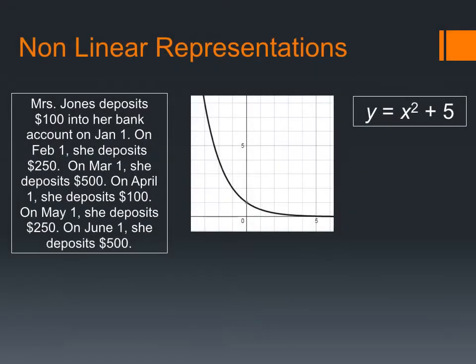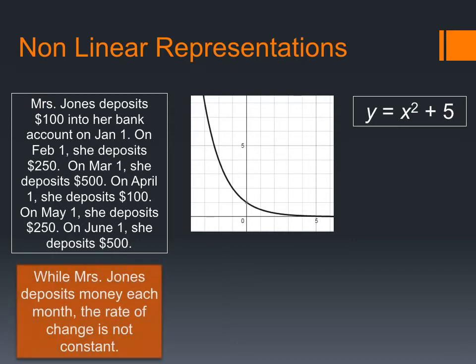Now let's look at these non-linear representations. What do we notice about each of these? Mrs. Jones has, I guess she deposits $100 on January 1st, on February 1st she deposits money, on March 1st she deposits more money, on April 1st more money. Do you notice that while she does deposit money every month, it is not a constant rate of change? So it's not linear.